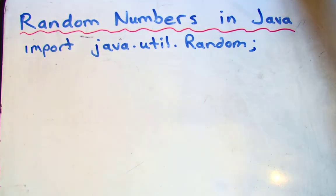There's actually two ways of making random numbers in Java. One is using the random class, and the other is using a built-in method within the math class called random. So we'll cover this one first.